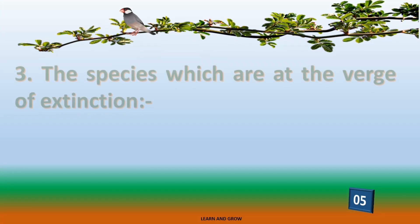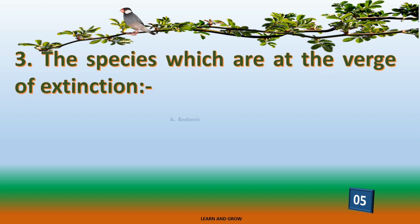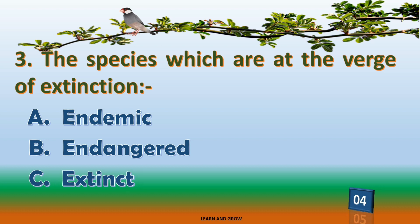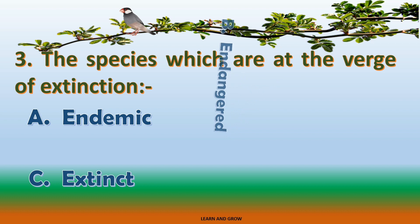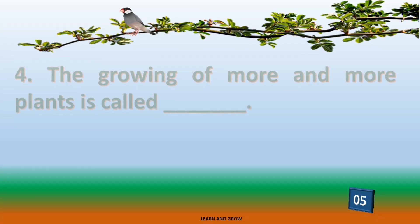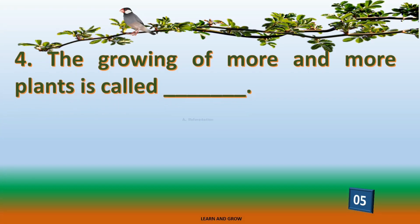The species which are at the verge of extinction — the right answer is option B: endangered. The growing of more and more plants is called —